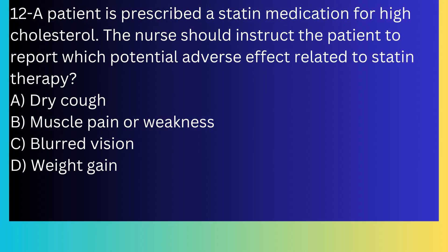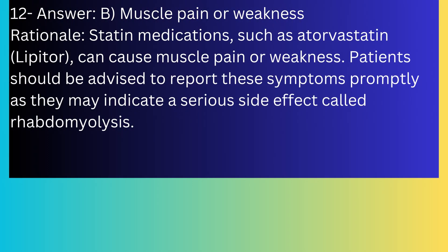Question number twelve: A patient is prescribed a statin medication for high cholesterol. The nurse should instruct the patient to report which potential adverse effect? A) Dry cough, B) Muscle pain or weakness, C) Blurred vision, D) Weight gain. The answer is B, muscle pain or weakness. Statin medications such as atorvastatin (Lipitor) can cause muscle pain or weakness. Patients should be advised to report these symptoms promptly as they may indicate a serious side effect called rhabdomyolysis.